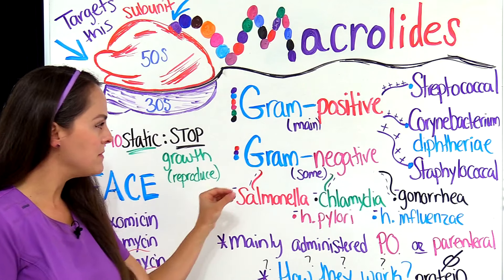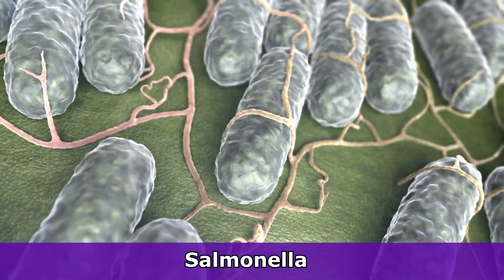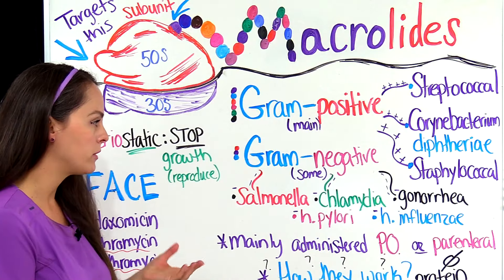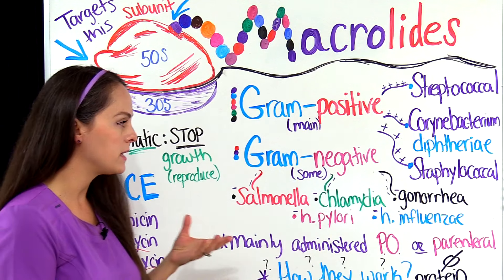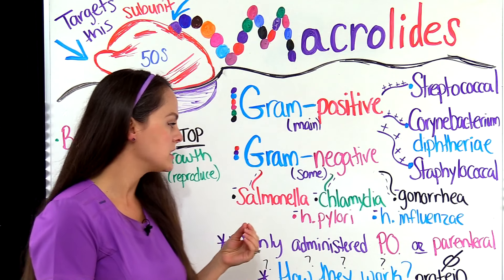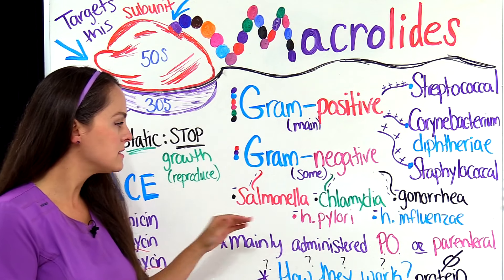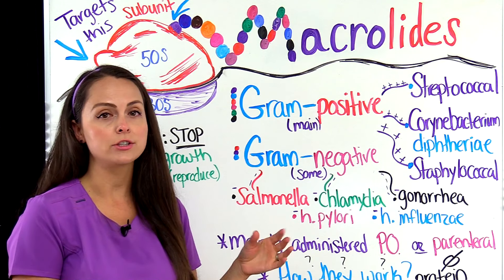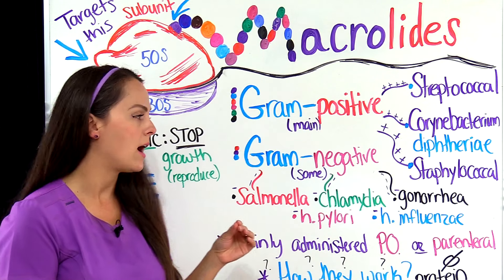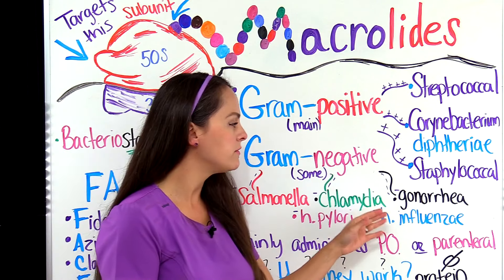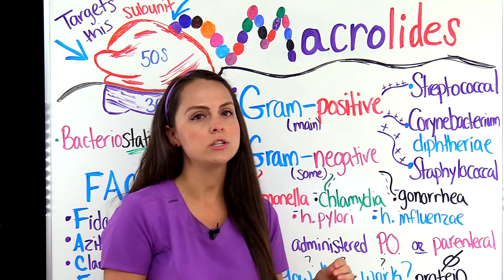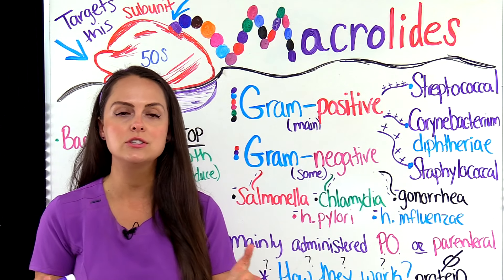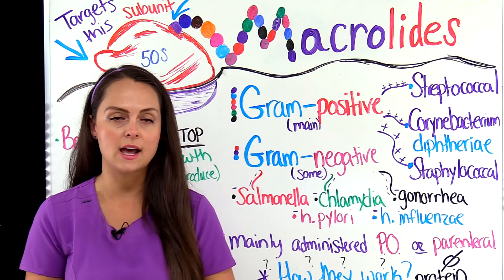Whenever we're talking about gram-negative, they like to target Salmonella, chlamydia and gonorrhea, which are big sexually transmitted infections, and some stomach infections caused by Helicobacter pylori, and Haemophilus influenzae, which is something that affects younger children and can lead to epiglottitis.